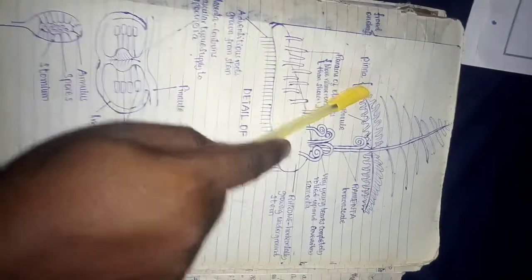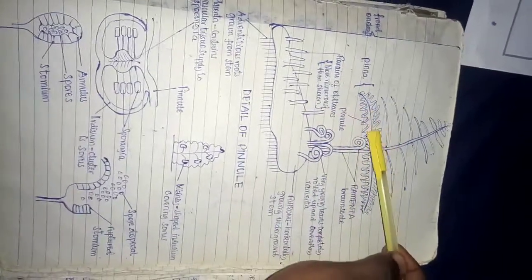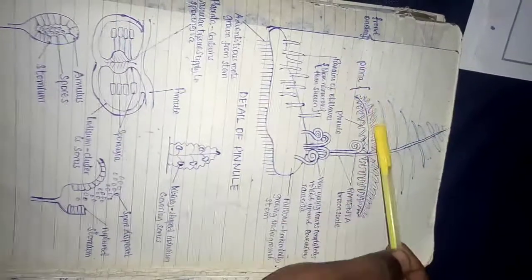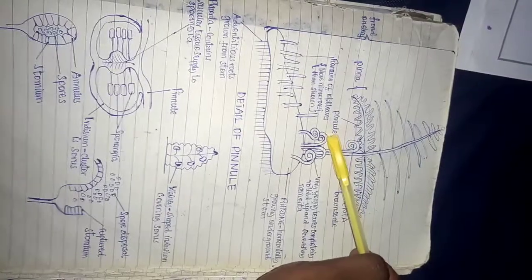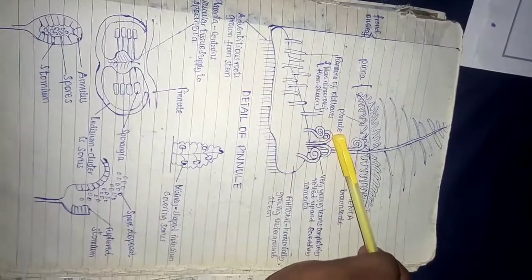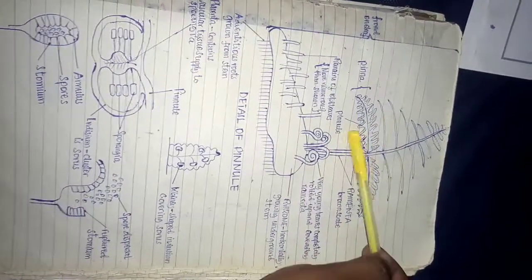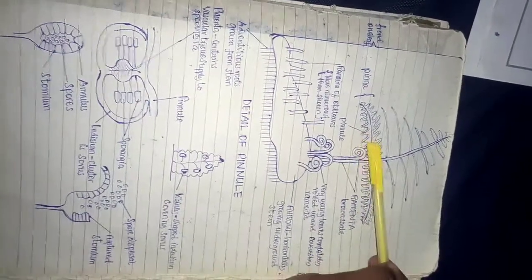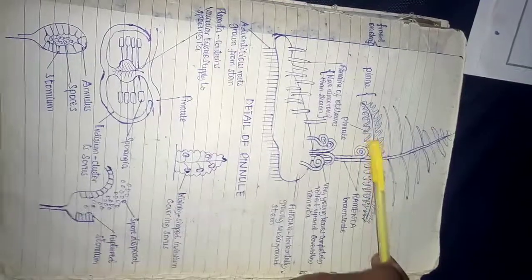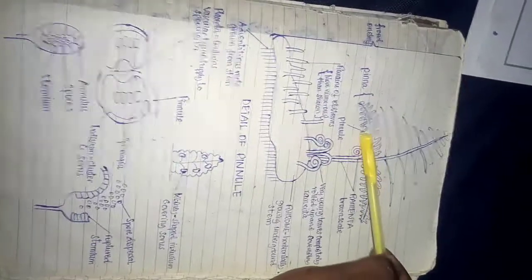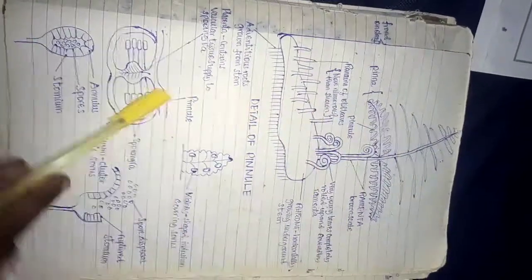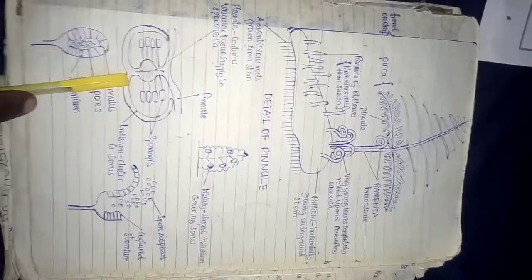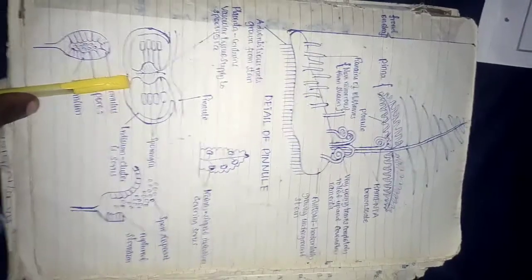A subdivision of the frond is a pinna, but also this pinna undergoes further subdivision to form what is called a pinnule. A pinnule is a subdivision of pinna. On the abaxial side — not the adaxial side, but the bottom side of the pinna — there are structures on the pinnule.